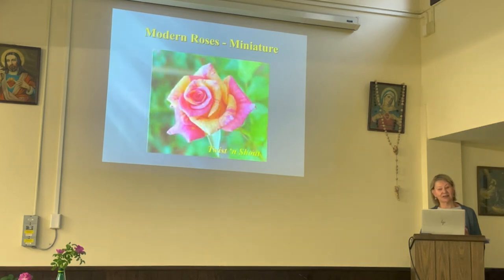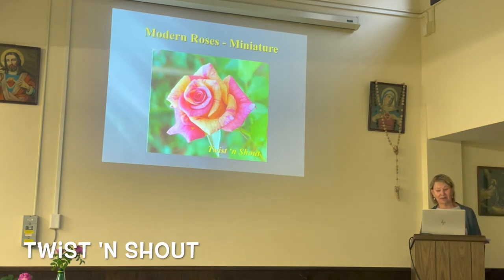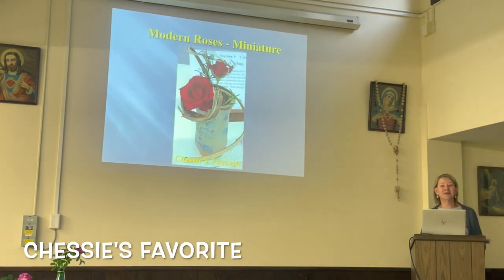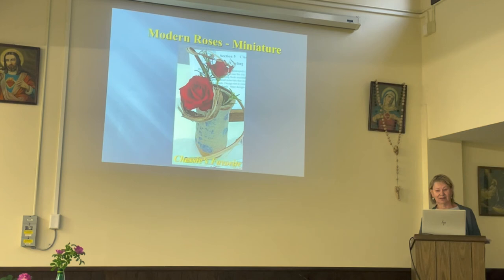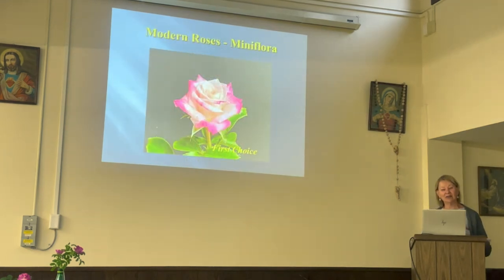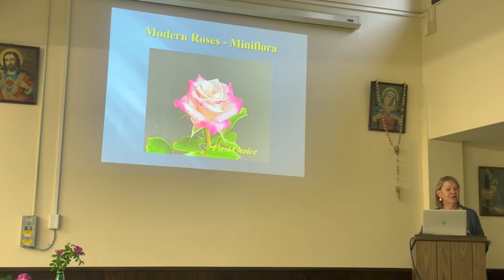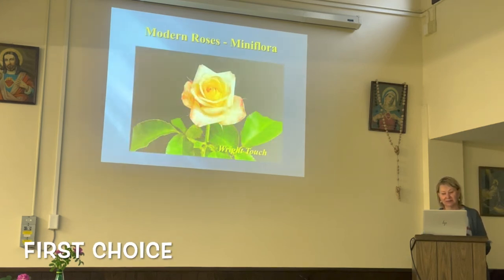Miniatures come in lovely colors and variations that are startling at times. This is called Twist and Shout — yellow and pink. And this is Chessie's Saber. They also come in the standard almost hybrid tea form of red. We have also added another class of roses into the mix called mini floras — halfway between the miniatures and the floribundas, so they're basically a little bit larger. Here's a couple: First Choice and Right Touch.